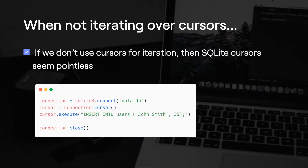I believe that the reason why we use cursors for both selecting and inserting in SQLite is just for consistency, to make your code more consistent. Every query uses a cursor, and that's it. Otherwise, you'd need some queries using a cursor and some not using a cursor, which could be a bit confusing, especially for new coders. So this is just the way it's done in SQLite.